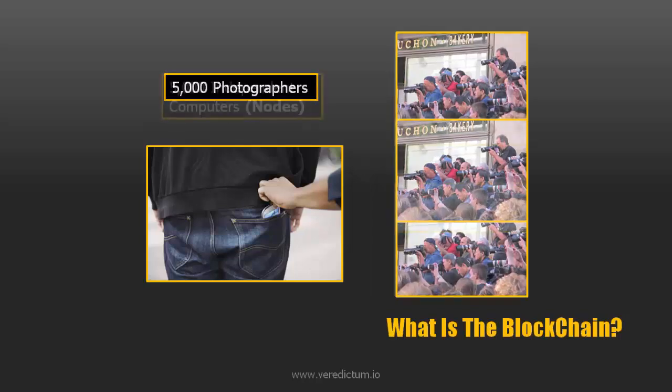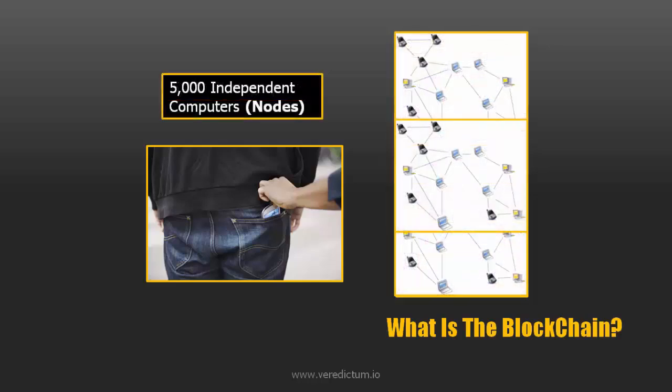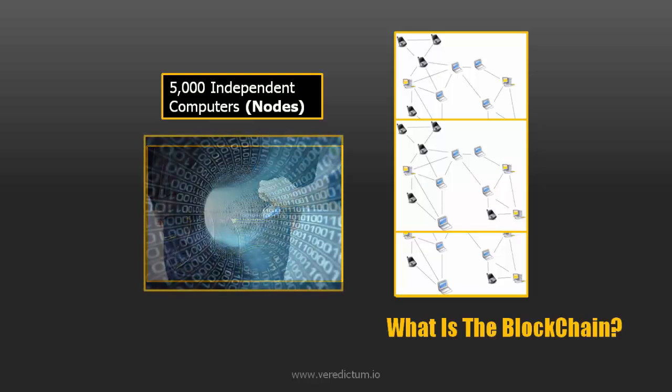This is how the blockchain works — except we substitute the 5,000 photographers for 5,000 independent computers connected globally. These are called nodes. And instead of the photographic images, we have data. Now this is where it gets a little technical, so just hold on in there. For this next stage of the explanation, we will use the example of the public blockchain that underpins Bitcoin, although broadly speaking, other private blockchains follow the same broad principles.